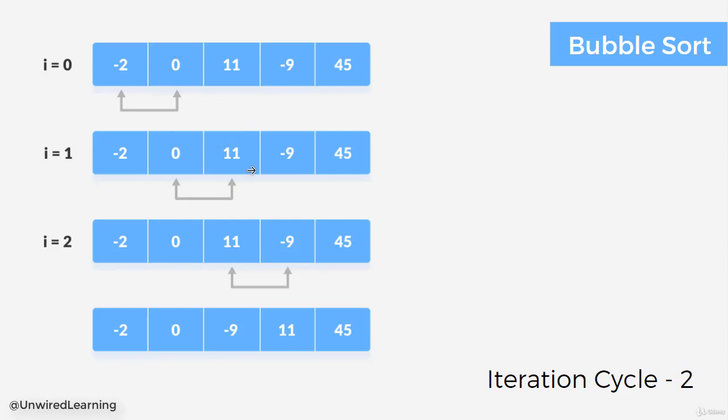Index 1 with index 2, no swapping. Index 2 with index 3. Here you can see 11 is greater than minus 9. Let me swap again. And here we have another sorted element.